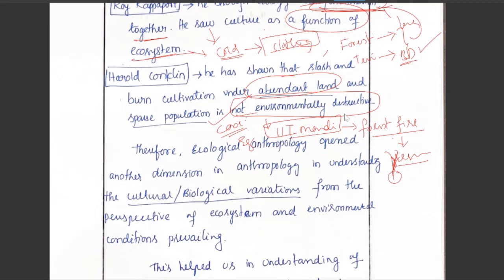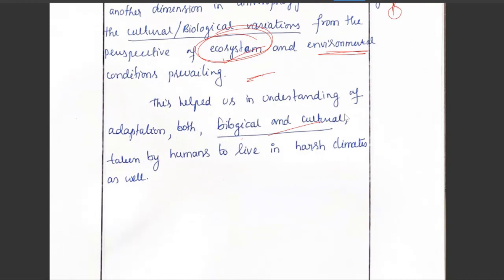Therefore, ecological anthropology opened another dimension in anthropology — understanding cultural and biological variations from the perspective of ecosystem and environmental conditions. This helped us understand the adaptations, both biological and cultural, taken by humans to live in harsh climates. I hope this is useful — please subscribe, like, and comment with previous year questions you'd like me to cover.